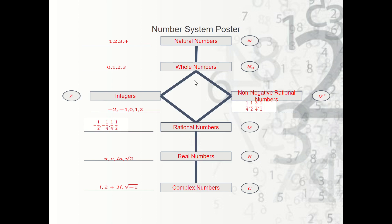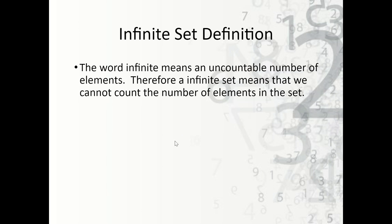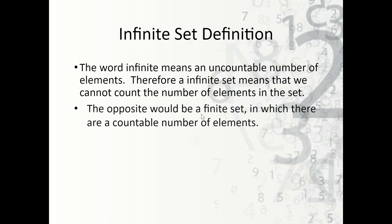Now let's talk about the definition of infinite set closure. What does infinite mean? Infinite means an uncountable number of elements — it goes on to infinity, keeping going forever. An example would be the natural numbers: we can count one, two, three, four, five, six, seven, eight, nine, ten, and keep counting — no matter what number we stop at, there's always a number past it. So an infinite set means we cannot count the number of elements in the set. The opposite would be a finite set, in which there are a countable number of elements — like the natural numbers between one and ten, which stops at ten.